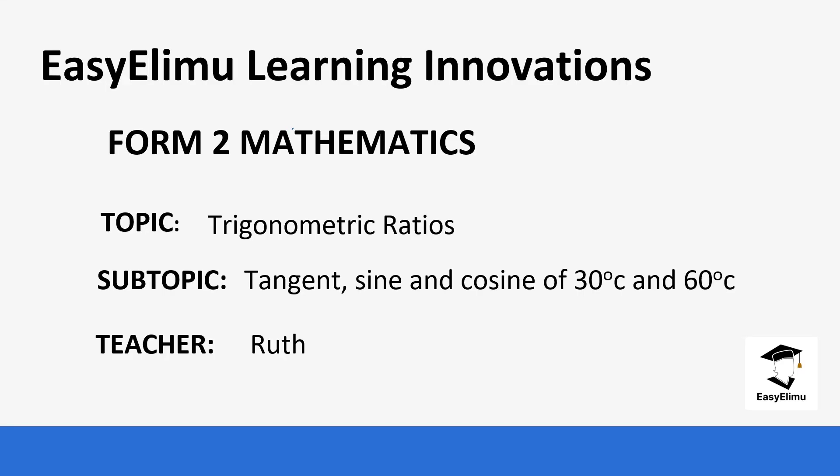Welcome to EZLM Learning Simplified. My name is Ruth and today we are going to be discussing two mathematics. The topic is trigonometric ratios. Previously we looked at the tan, sine and cosine of 45 degrees. Today we are going to look at the tangent, sine and cosine of 30 degrees and 60 degrees.